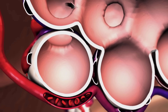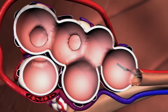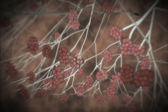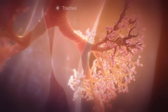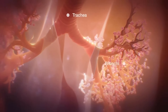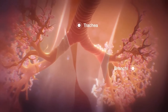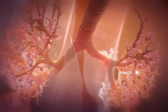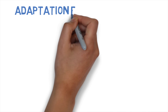The surface area of the alveoli is enormous. Because there are several million of them inside the lungs, the total surface area is somewhere between 50 to 75 metres squared in an average adult — about the same size as a tennis court.